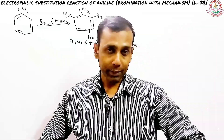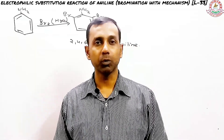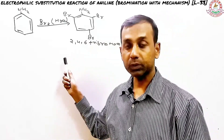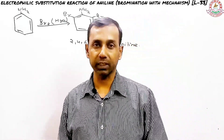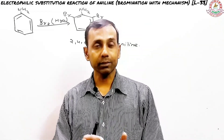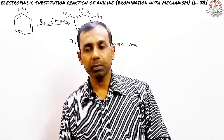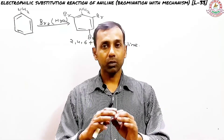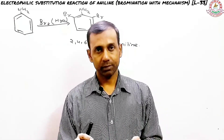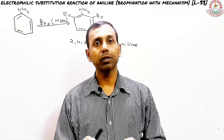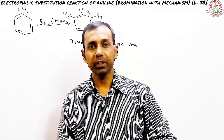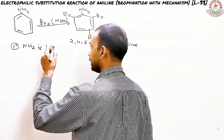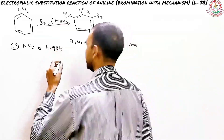But what if we want to have mono-substituted bromoaniline? The trisubstituted product is not as useful as the mono-substituted one. That's the twist here. When you react aniline with bromine water, bromine goes to all three places — the ortho and para positions — because NH2 is highly reactive.